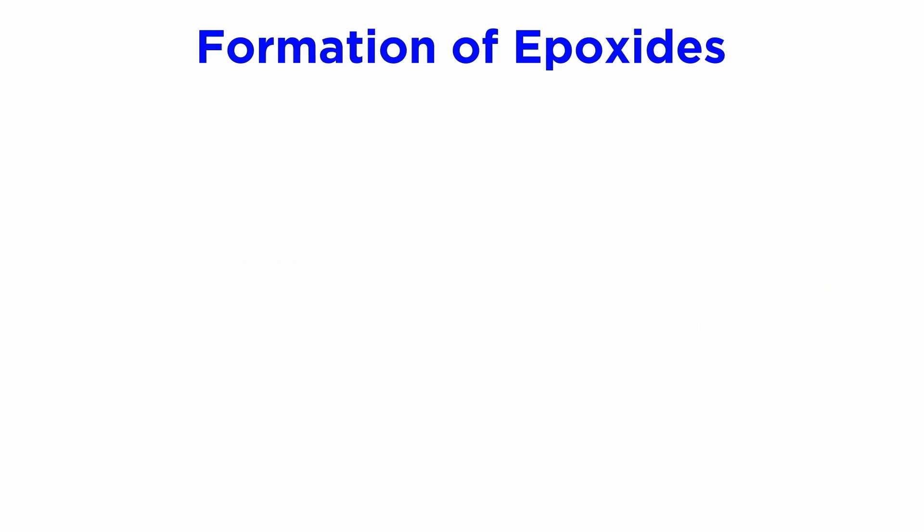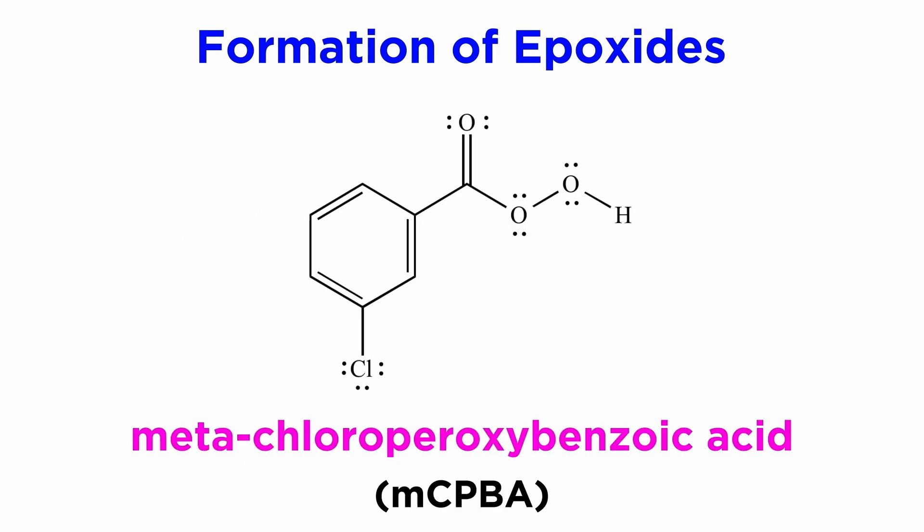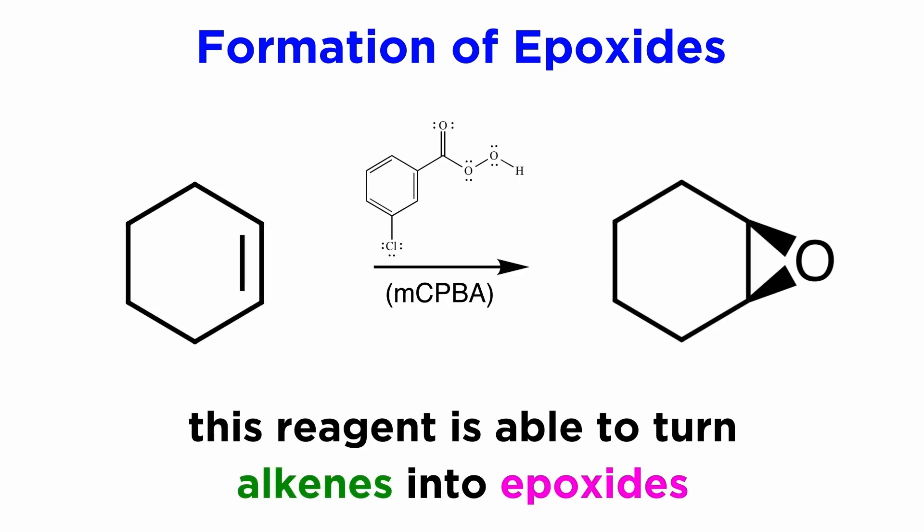First we must discuss epoxide formation. A very common way we can make these is by using an alkene reactant and a reagent called metachloroperoxybenzoic acid, or MCPBA. This will turn an alkene into an epoxide, because one of these oxygen atoms in this functional group will get transferred into the pi bond.